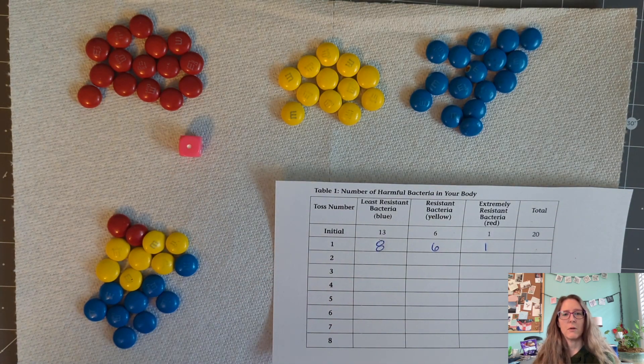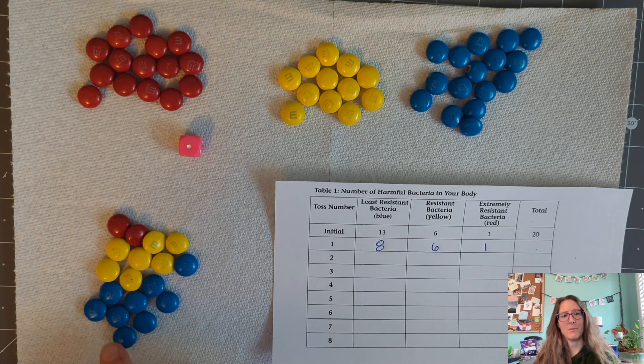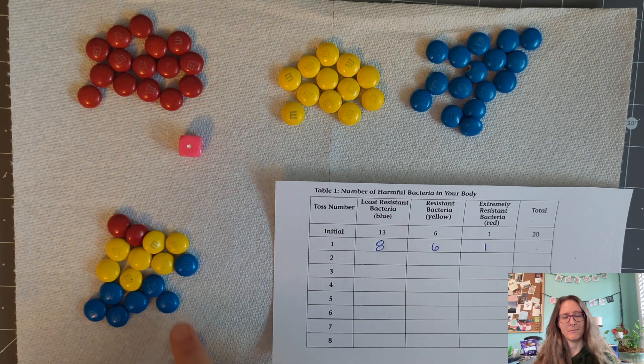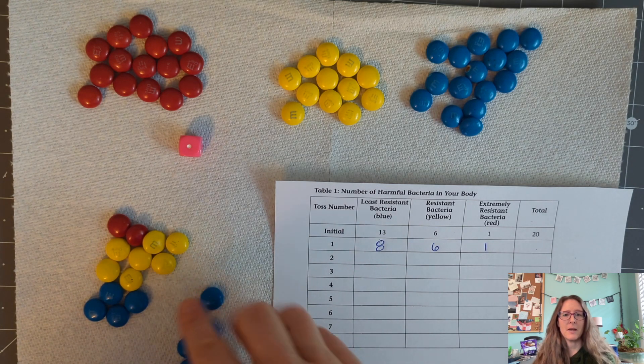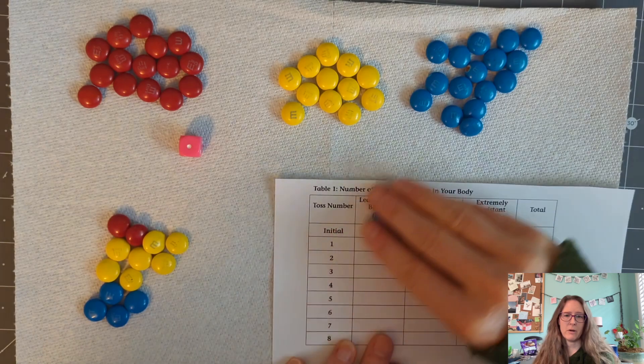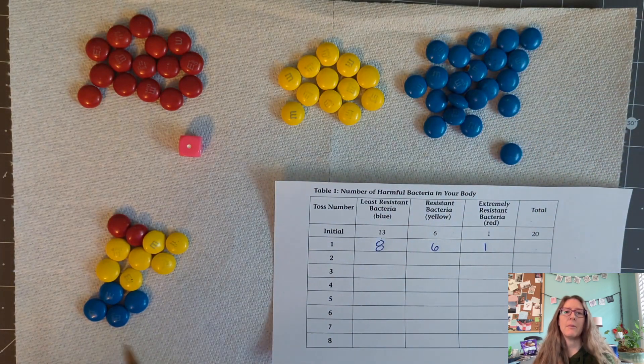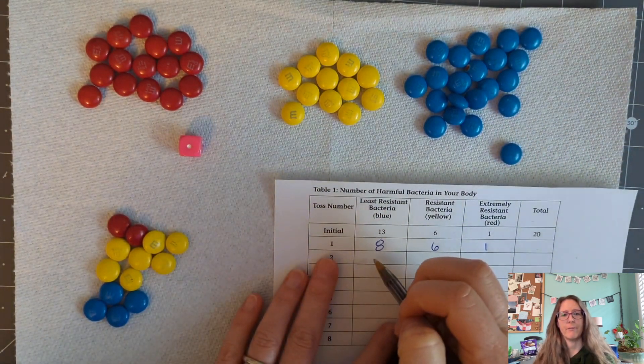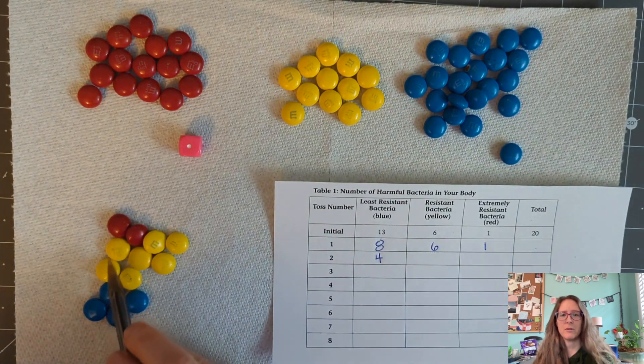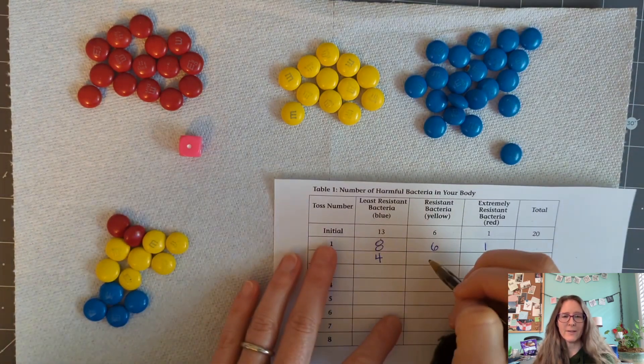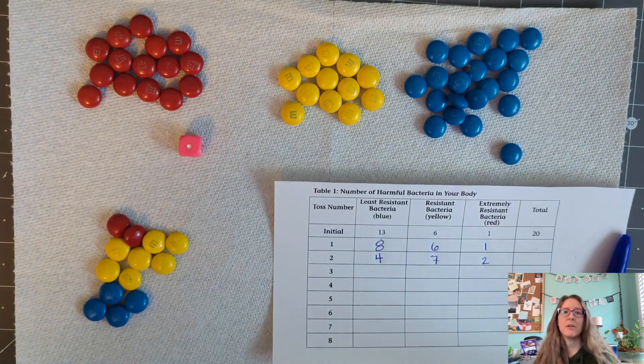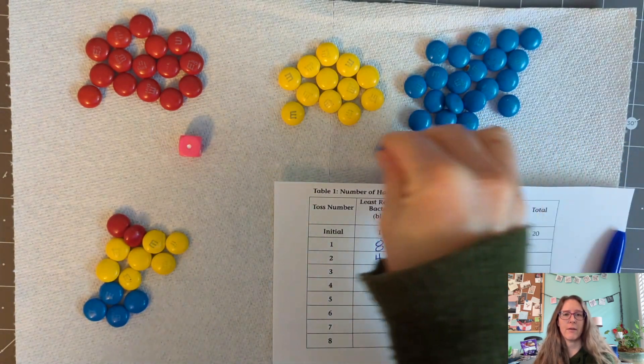If students roll a two or a four, they've forgotten to take their medicine and nothing happens. After the dice roll and adjustment of the bacteria numbers, students tally how many bacteria of each color they have. Then the bacteria reproduce. Students always forget this step, but just remind them that bacteria grow quickly, and we need to account for that.